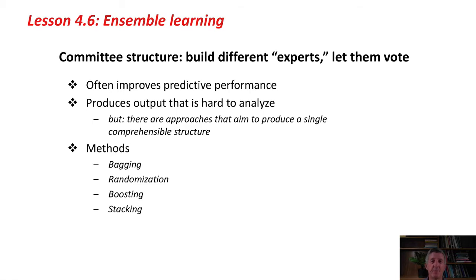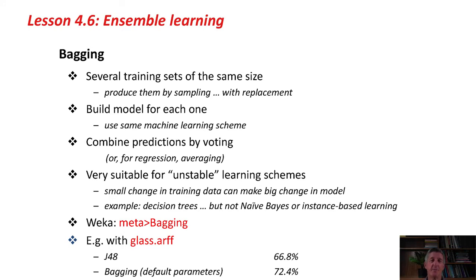They're all implemented in Weka. The idea with bagging is that we want to produce several different decision structures — say, using J48 to produce decision trees. We get slightly different decision trees by having several different training sets of the same size. We do that by sampling the original training set with replacement, which means some samples may be repeated. We produce several different training sets, build a model for each one, then combine the predictions by voting — or, in a regression situation, by averaging the numerical result.